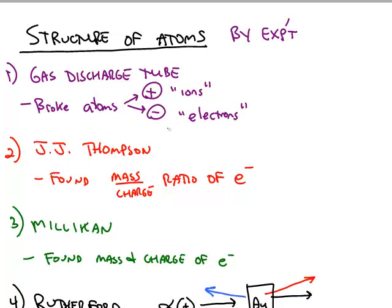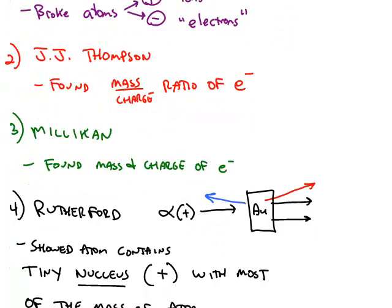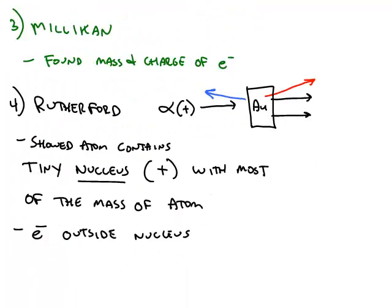J.J. Thompson found the ratio of mass to charge of that negative electron, and in the third experiment Millikan was able to calculate both the mass and the charge of the electron. A fourth experiment by Rutherford,